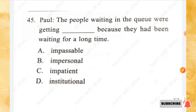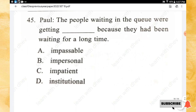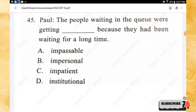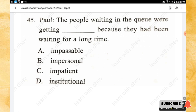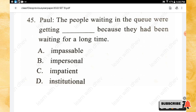Question 45: The people waiting in the queue were getting _____ because they had been waiting for a long time. Options: impassable, impersonal, impatient, institutional. The right answer is — impatient.